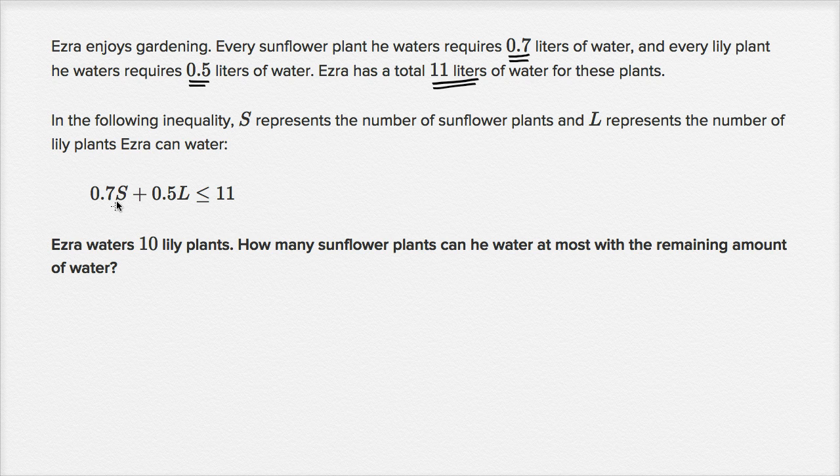See if this makes sense. So the number of sunflower plants is S, and he would have to use 7 tenths of a liter per plant. So this first term right over here, this is how much water used to water the sunflower plants, and then the second term is how much water used to water the lily plants, because he needs half a liter for each of the L lily plants. And he has a total of 11 liters, so this sum right over here has to be less than or equal to 11.